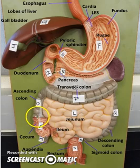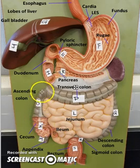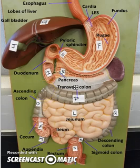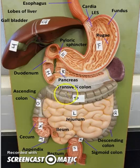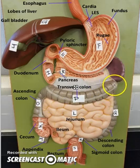From the cecum, the ascending colon goes upward. At the turn on the liver side is the hepatic flexure, and it goes across the transverse colon. There's a big omentum here where we store belly fat — you can't see it. On the spleen side, there's the splenic flexure.